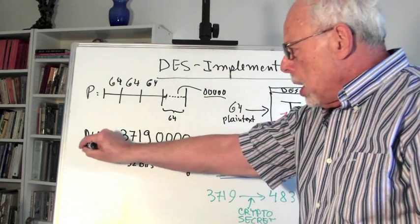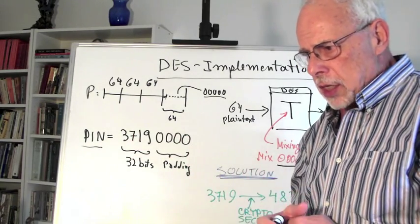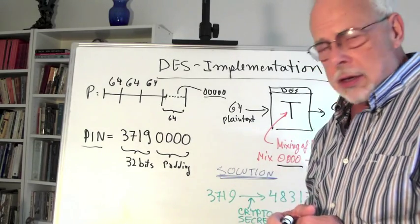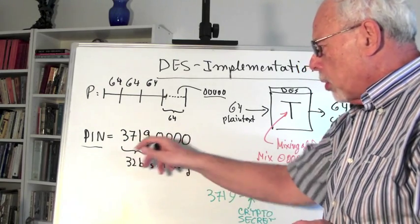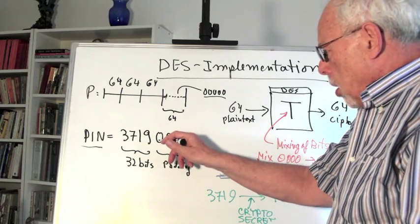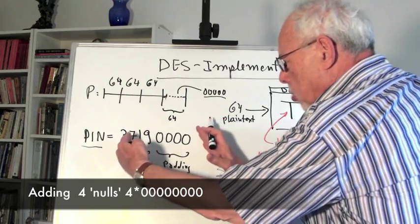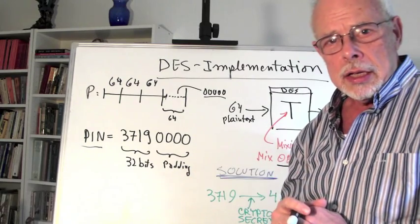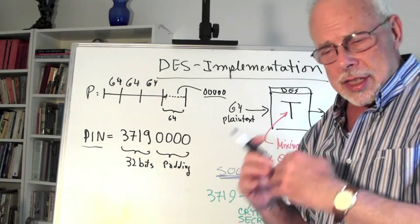For example, some people take a PIN for a card payment, recognize it's sensitive, and decide to encrypt it with DES or Triple DES. But a PIN has four digits — 32 bits — so they pad it with zeros and encrypt this package to get 64 bits of ciphertext. Not a good idea. They now have a much weaker cipher to protect them.